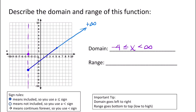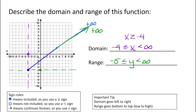Now let's think about the range. The lowest point is at negative 5 with a filled-in circle, so the bottom boundary is negative 5 less than or equal to y. It's also going up in the positive direction, so the upper boundary of the range is positive infinity: less than infinity. Alternatively, you can write the domain more conventionally as x is greater than or equal to negative 4, since all x values are just bigger than negative 4. Similarly, you could write the range as y is greater than or equal to negative 5. Either answer is correct.